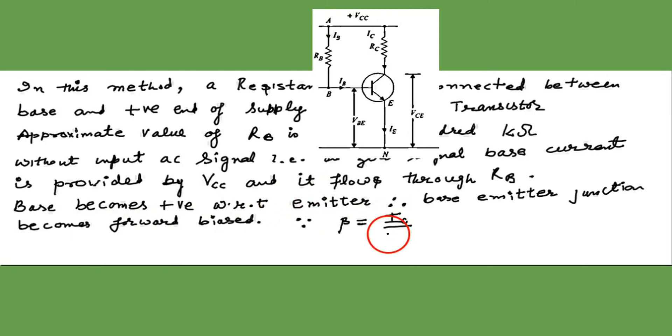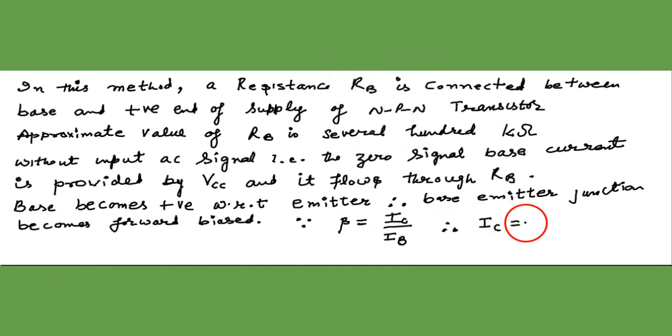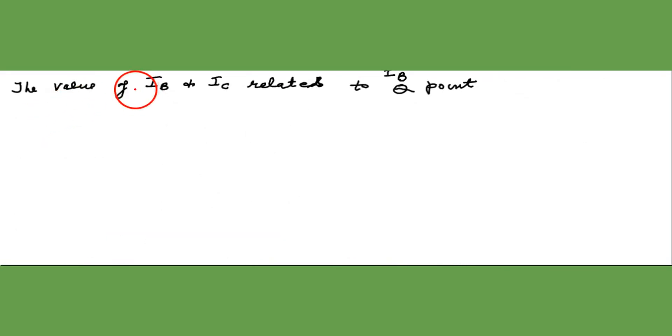Now the beta current gain in common emitter configuration, IC over IB. IC is beta times IB. And the value of IB and IC, they relate to the Q point. The Q point is fixed with the fixing IB and IC. The value of IB and IC relates to the Q point. Q point is determined by these two currents. IB is fixed by RB. IC, if IB is fixed, then naturally IC also becomes constant.